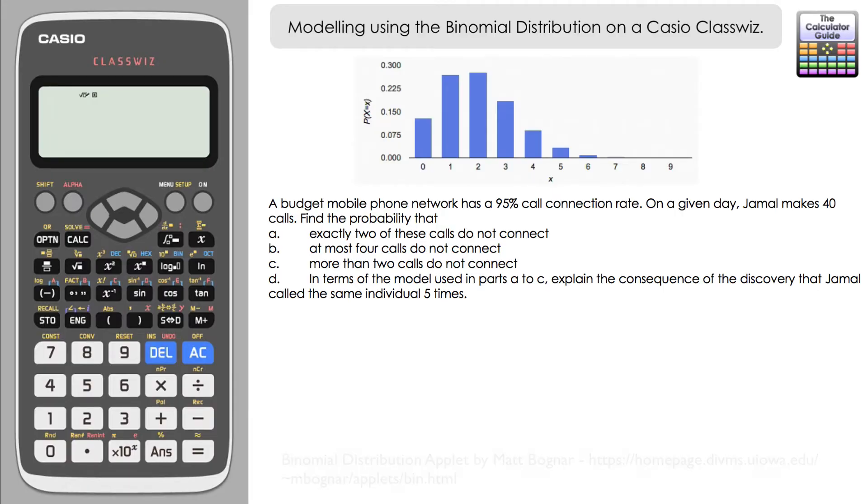Now before we answer these, we need to set up the model for the binomial distribution. So I'm going to set this up as the variable X is binomially distributed with an n of, well n is going to be the number of calls, so it's 40 calls.